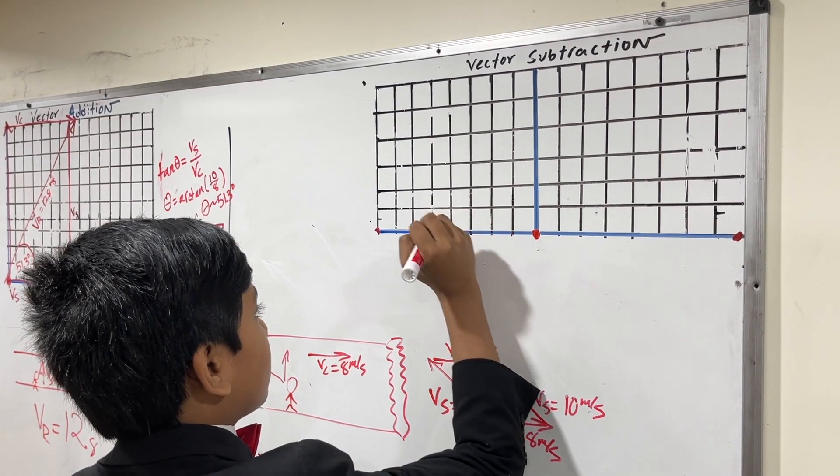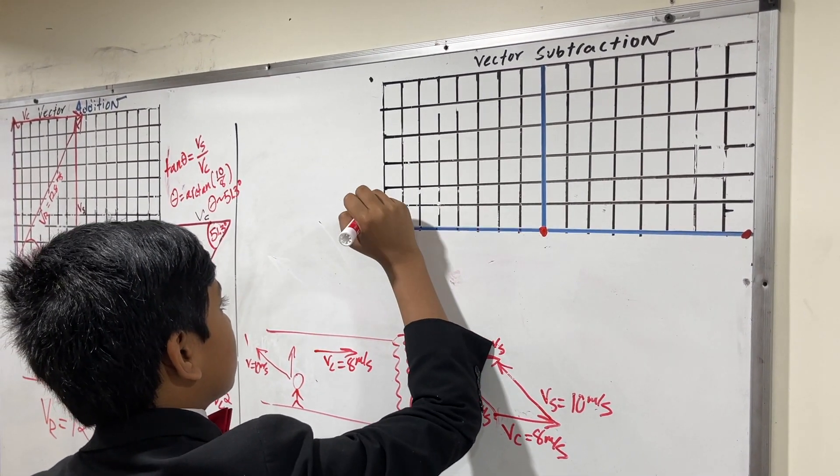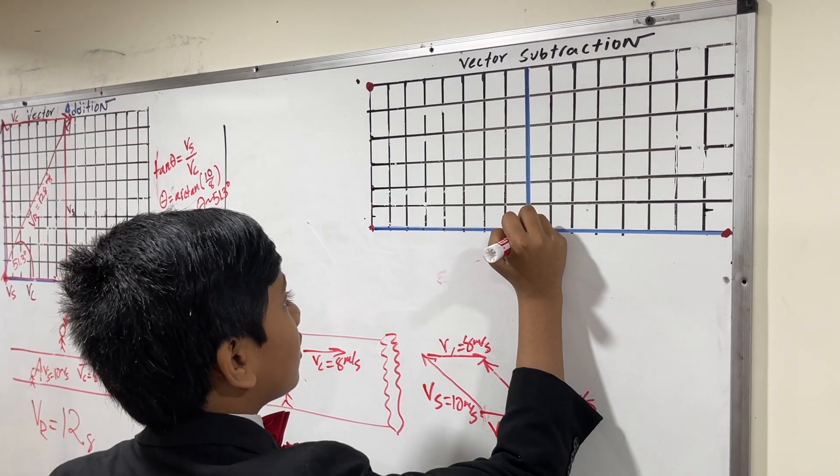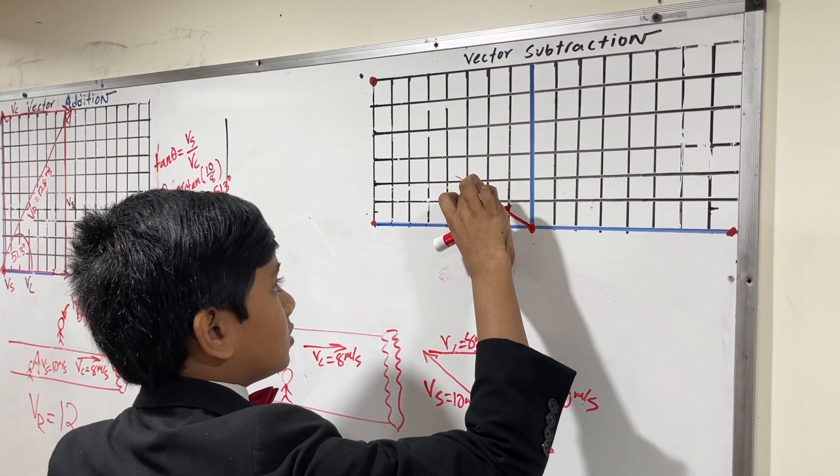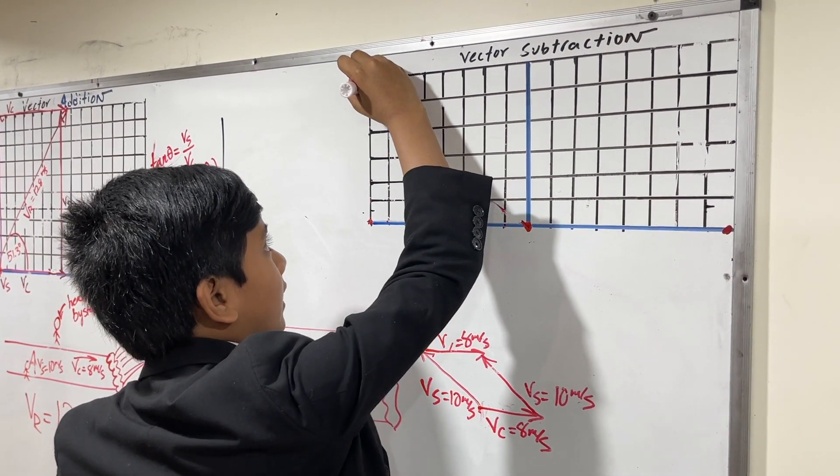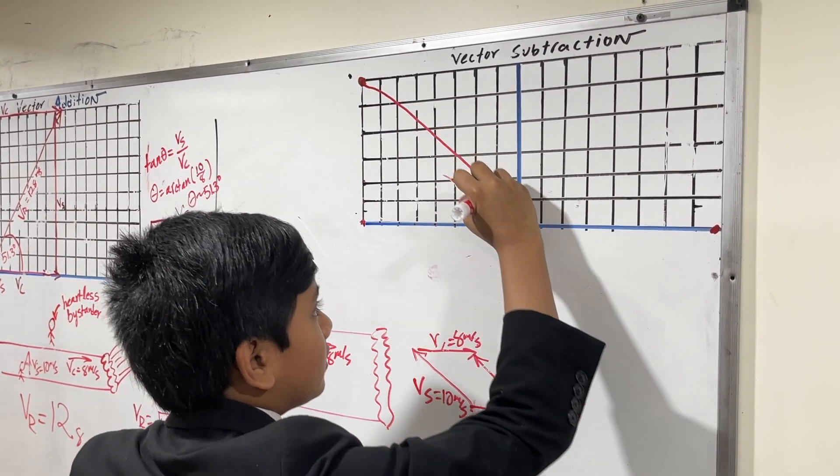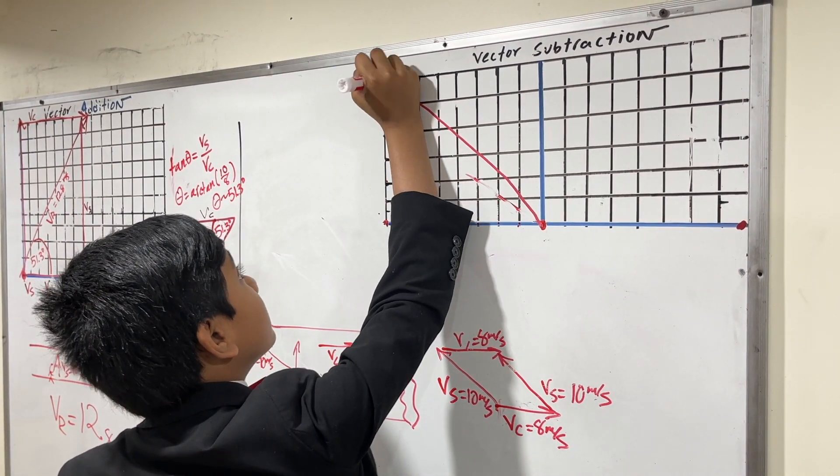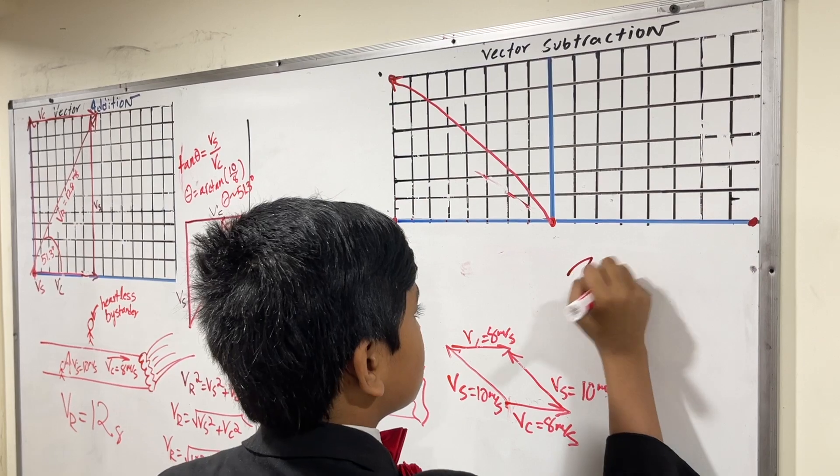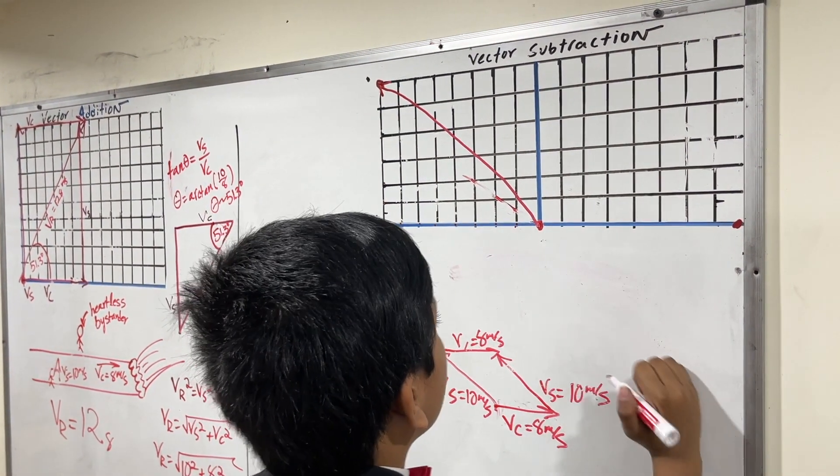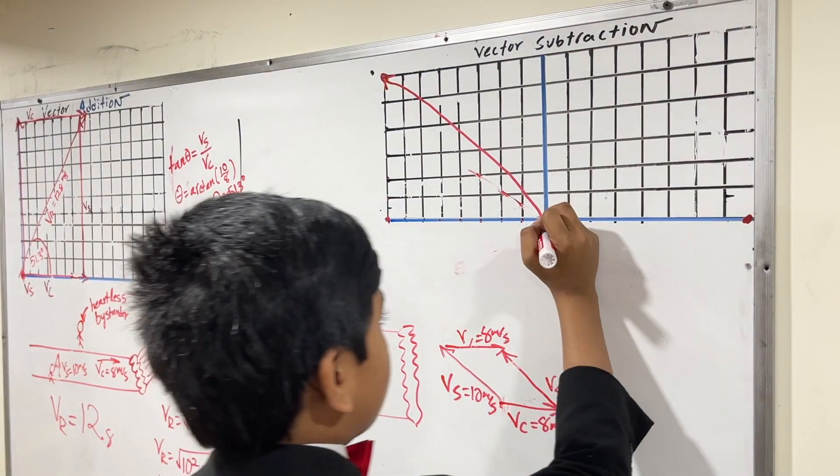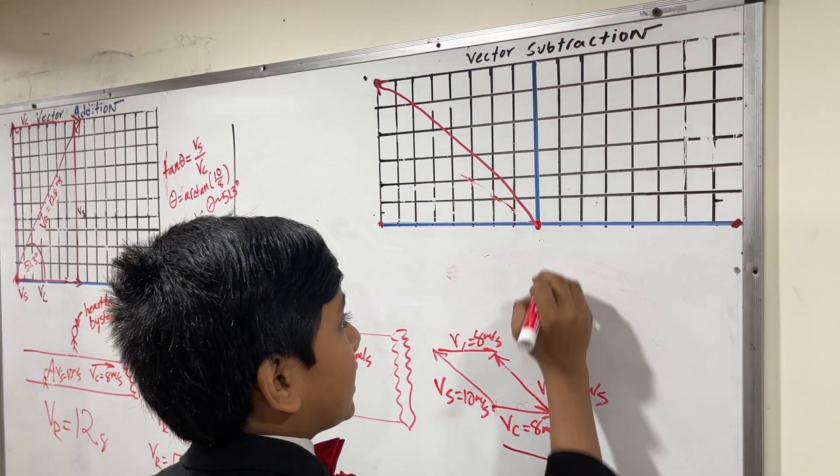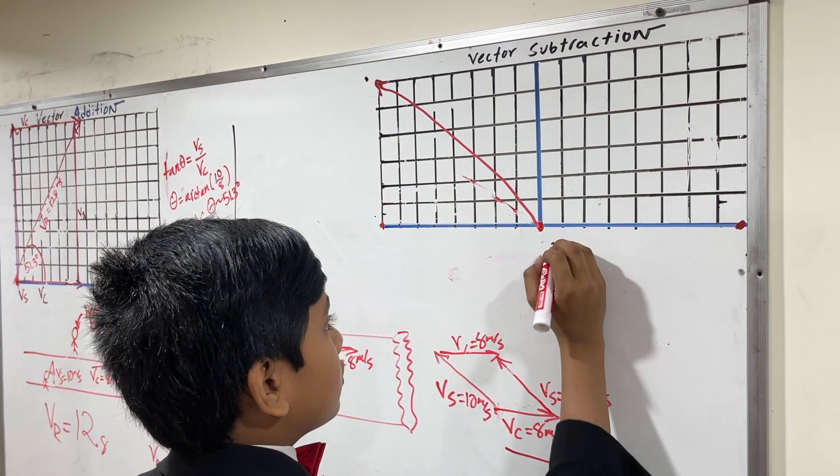So, let's do that. 1, 2, 3, 4, 5, 6, 7, 8. 0, 1, 2, 3, 4, 5. And. All right. So, here is our point. And. This is our line. Okay. And it is going this way. So, now. Let's just. I put a little more ink. So, now. What we're going to do is we're going to draw V S. Uh, no. V C. Which is 8 meters per second. From here to here. And, obviously, this will only be 8 units. So, 0, 1, 2, 3, 4, 5, 6, 7, 8.